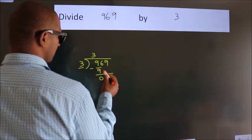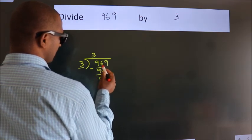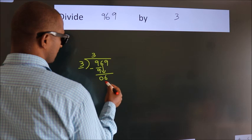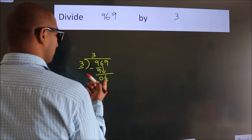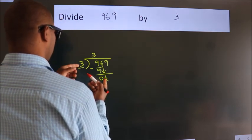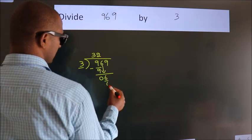After this, bring down the beside number. So 6 down. So 6. When do we get 6? In the 3 table, 3 twos are 6.